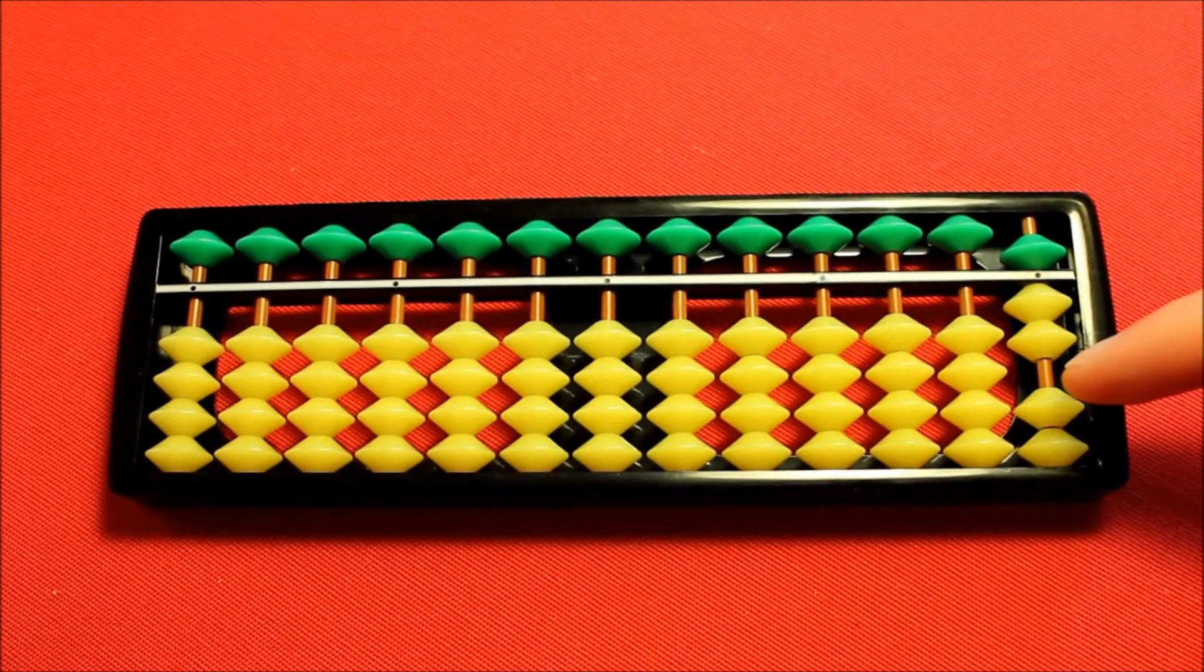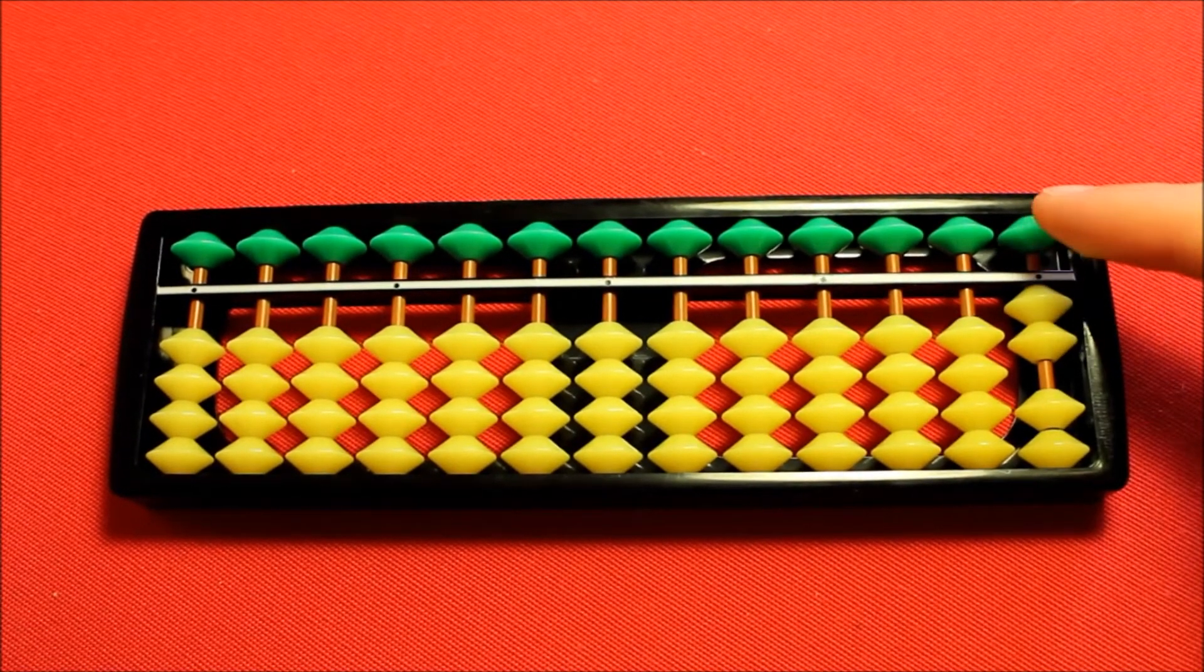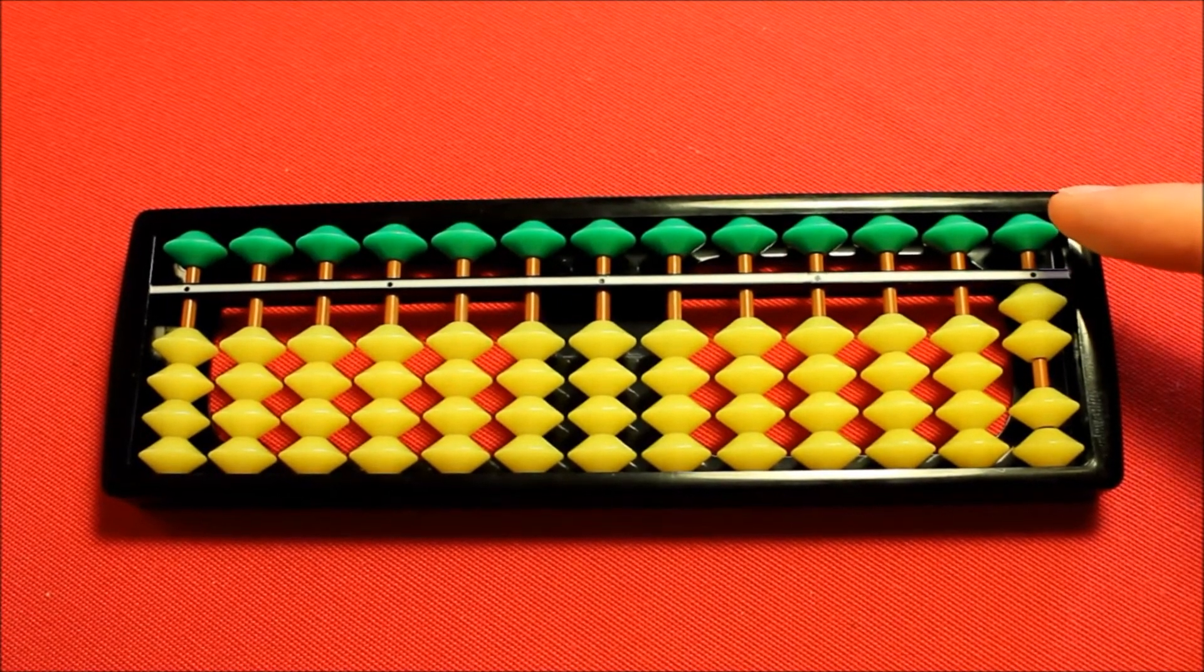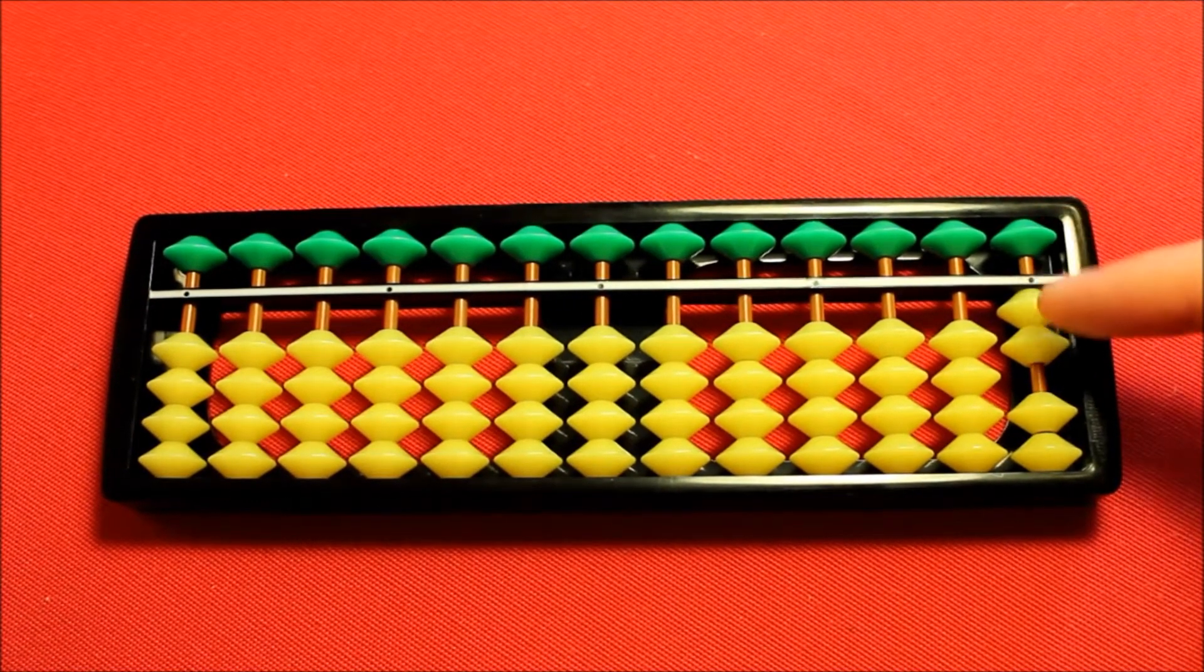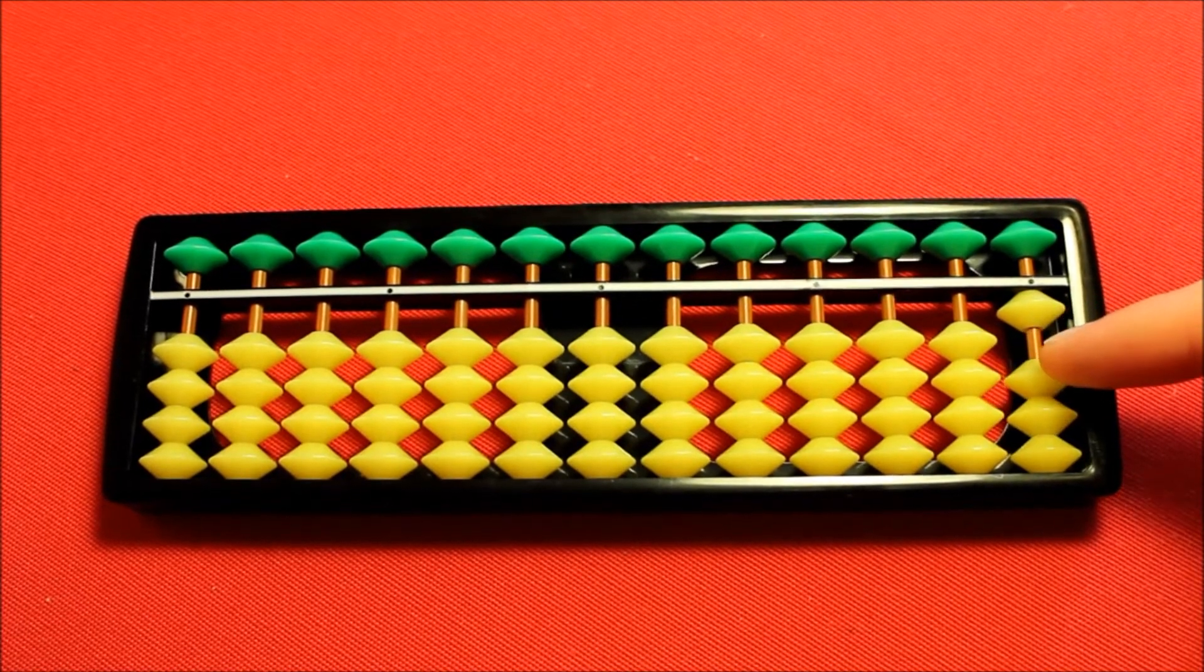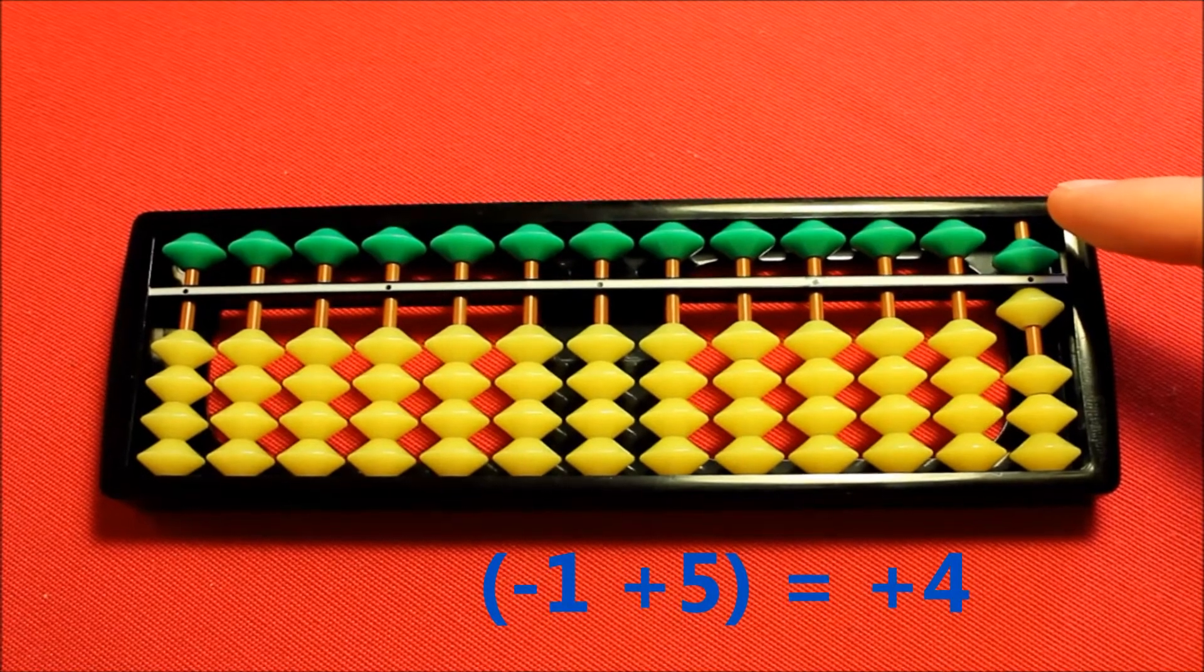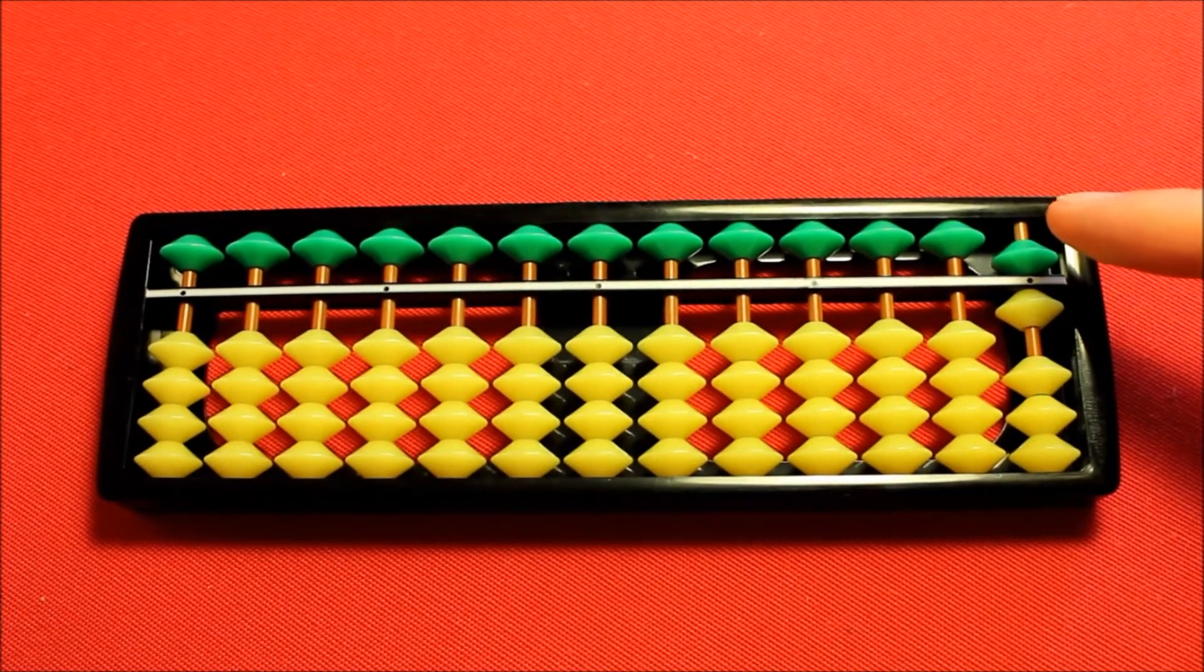Lastly let's add four. So starting with two. I don't have four earthly beads to use so using the heavenly bead will mean I'm adding five which is one more than the four I wish to add. So I subtract one then add the five which means I've added four and two plus four equals six.